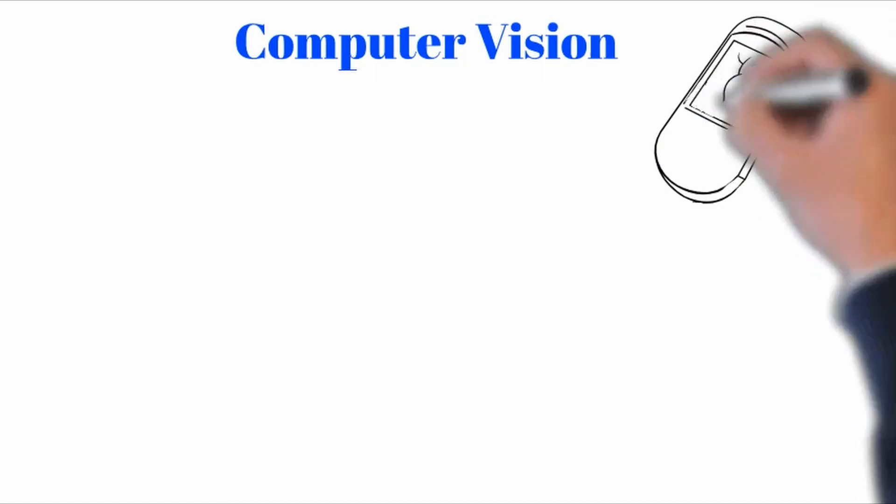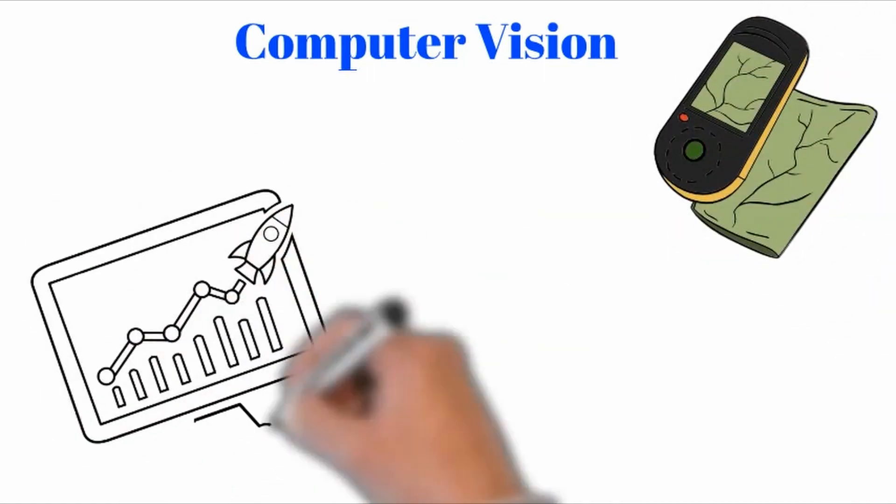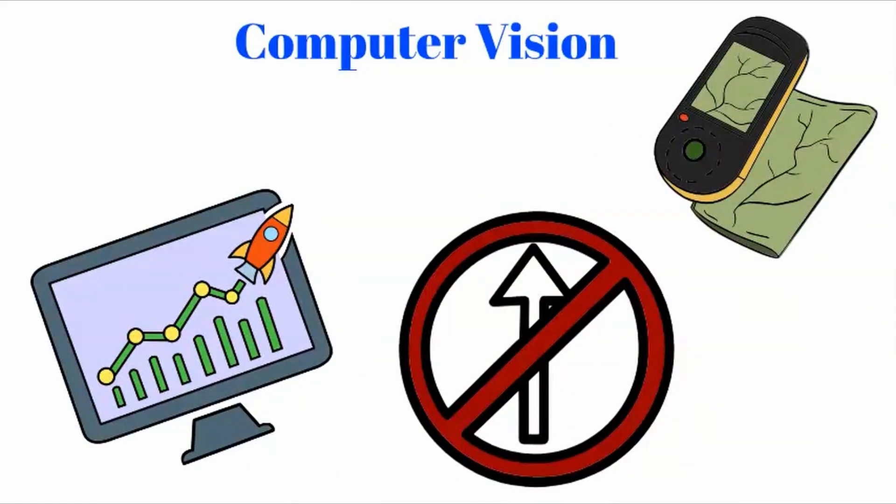Computer vision is the reception of an image from an external machine, which translates it into digital data. It's used, for example, to read signs on the road.